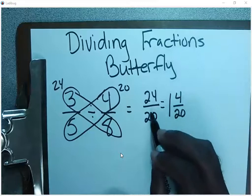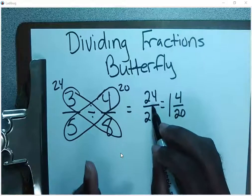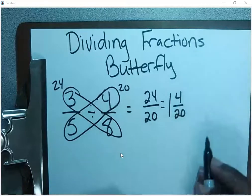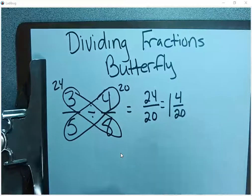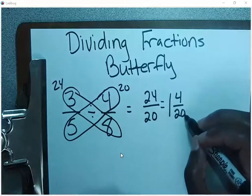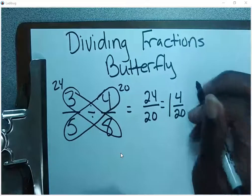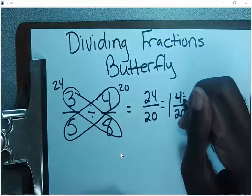20 can fit into 24 one whole time, and then you have four left over. That's where the numerator comes from. So now we got to see if this can be reduced. Four and 20 share a greatest common factor of four. So I'm going to divide both parts by four.